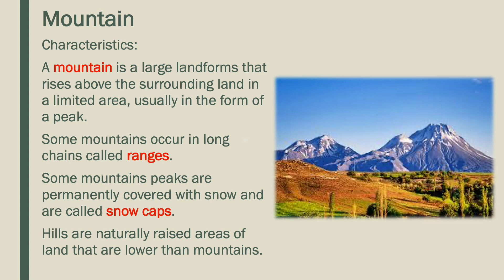One of these landforms is a mountain. A mountain is a large landform that rises above the surrounding land in a limited area, usually in the form of a peak. Some mountains occur in long chains called ranges. Some mountains' peaks are permanently covered with snow and are called snow caps.